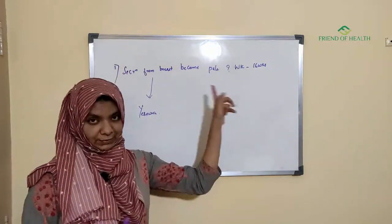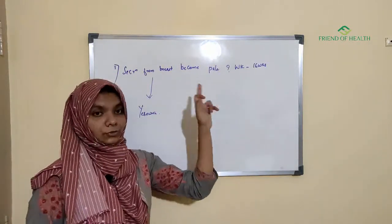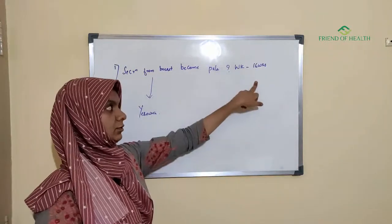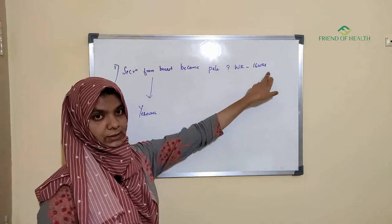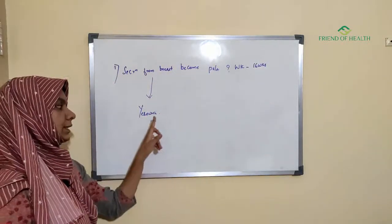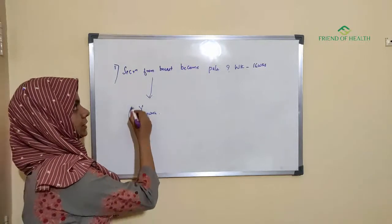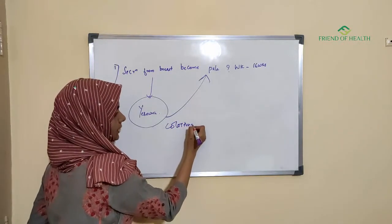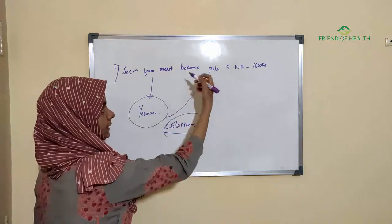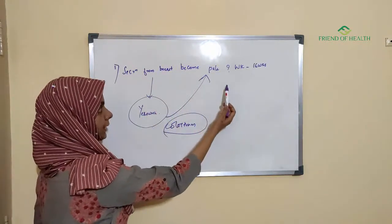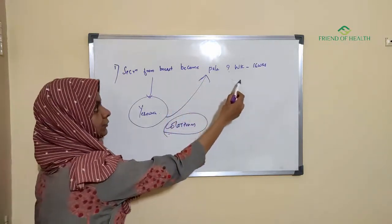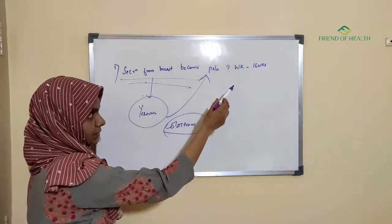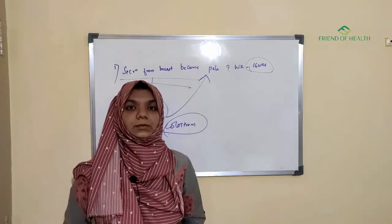Another previous question from the 2014 Kerala MD entrance: from which week does breast secretion become pale? The answer is from 16 weeks onwards. This secretion is called colostrum — a yellowish pale secretion from the breast. Note: the question asked about when it becomes pale, not about colostrum by name, so read the question carefully at least twice.